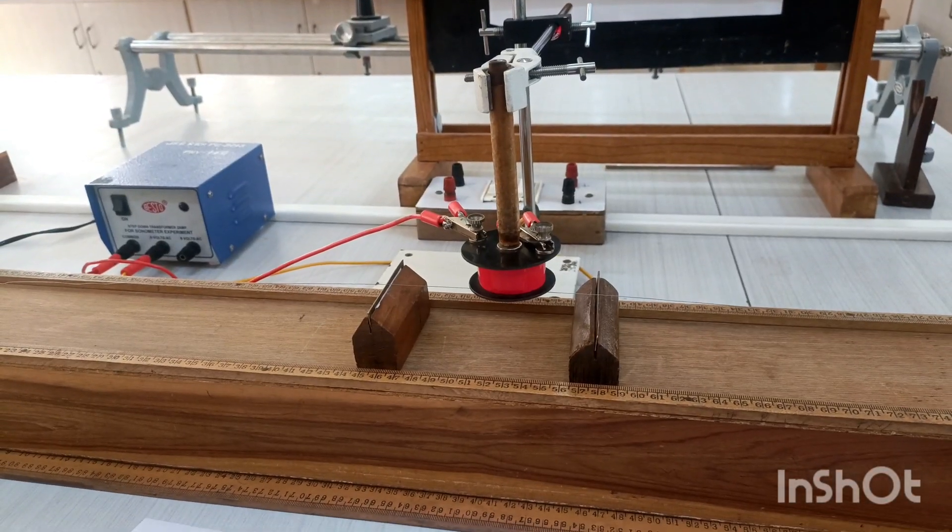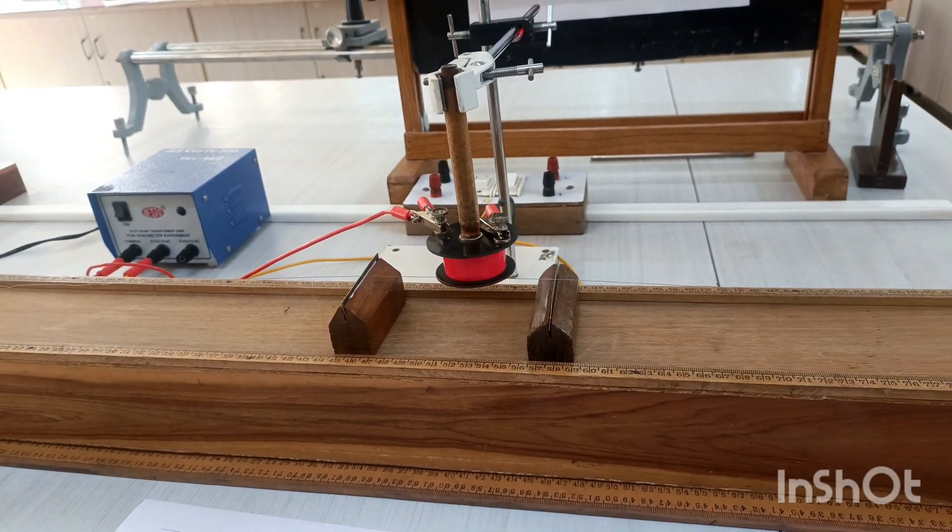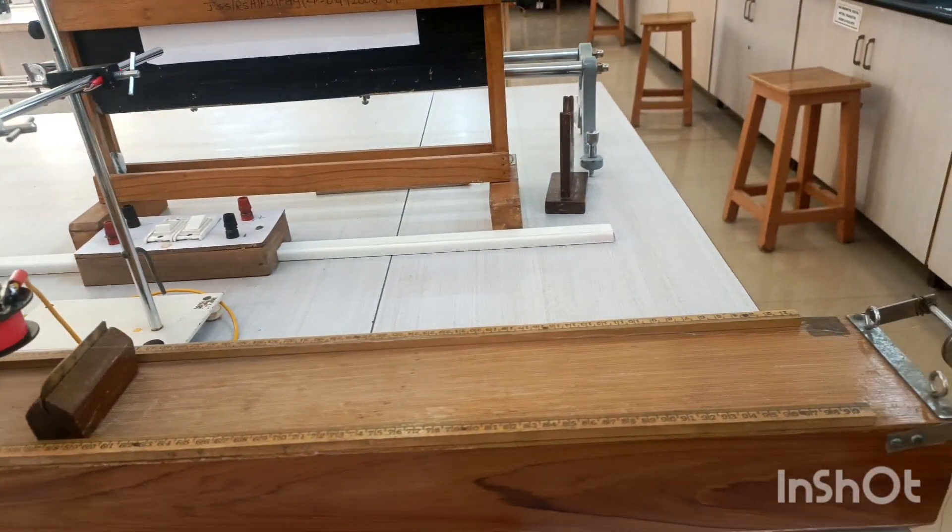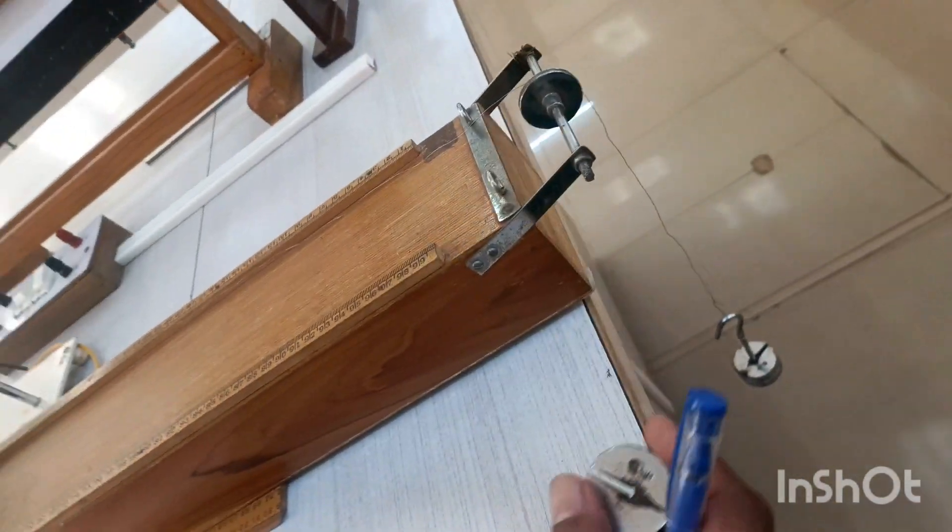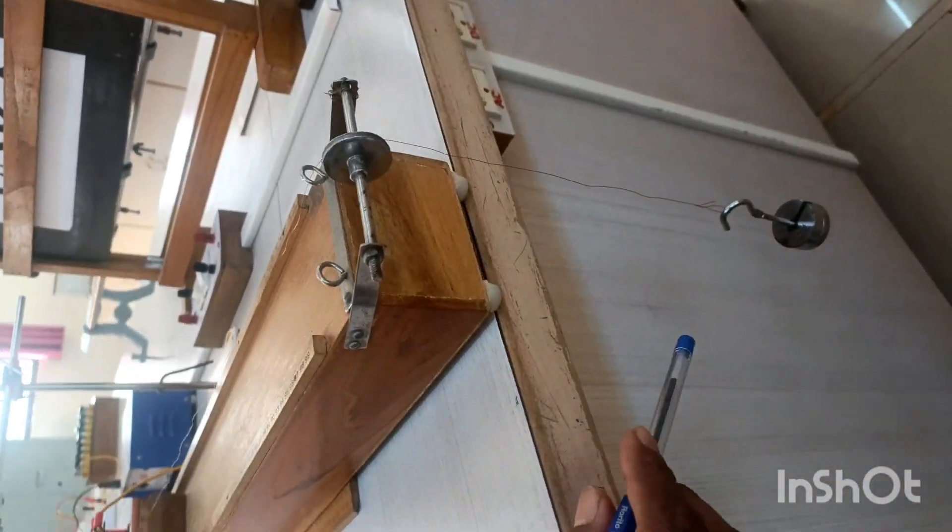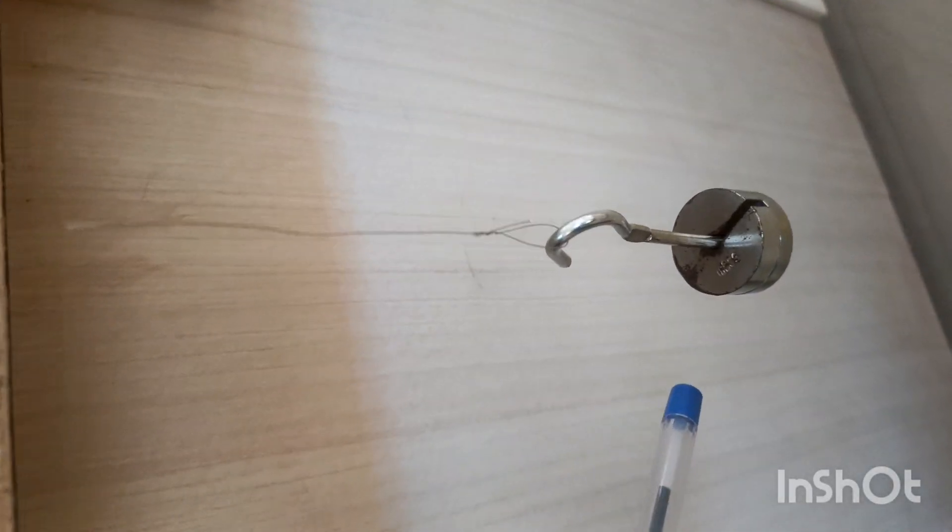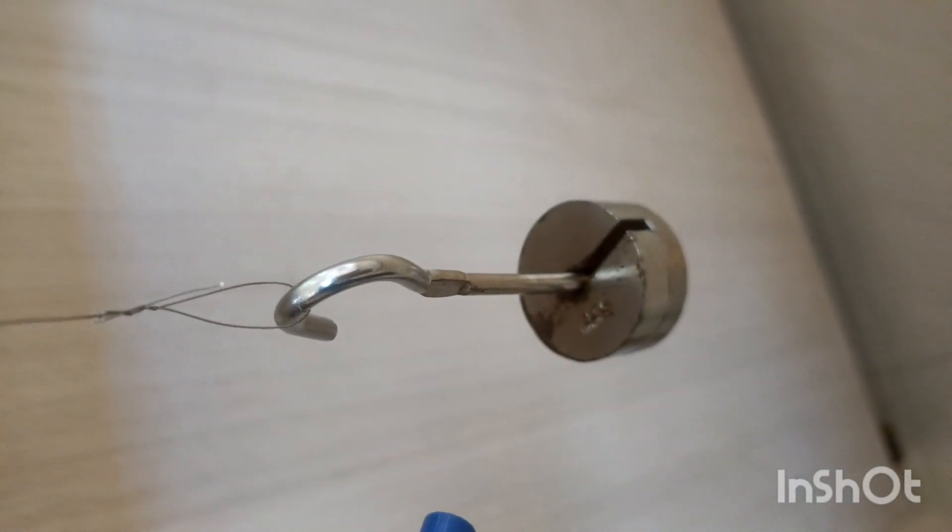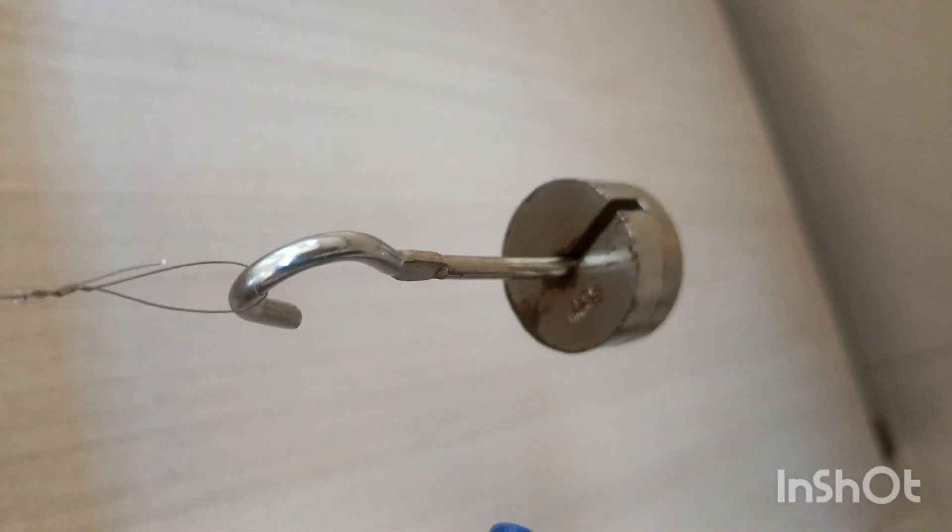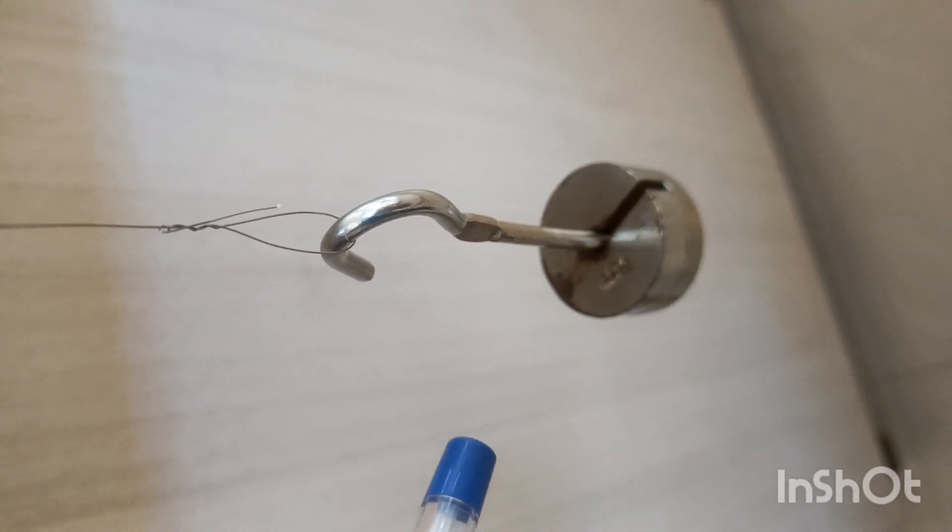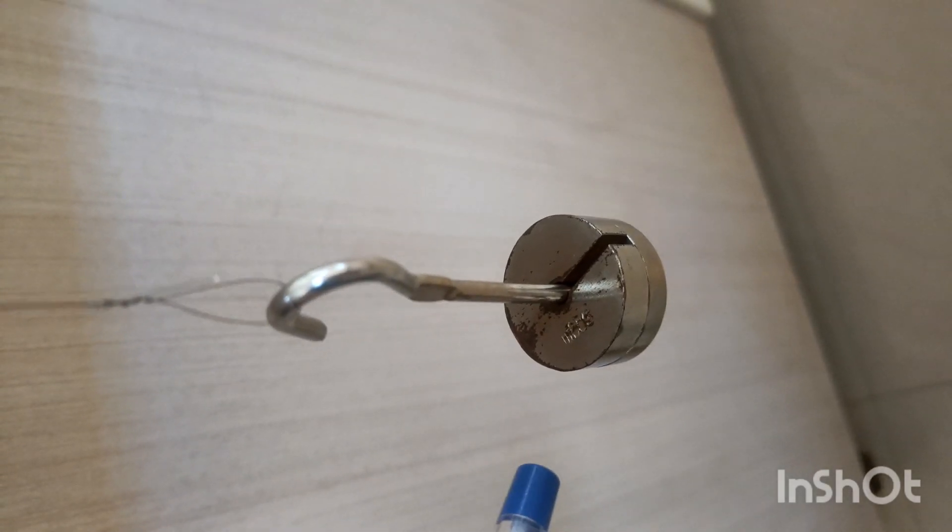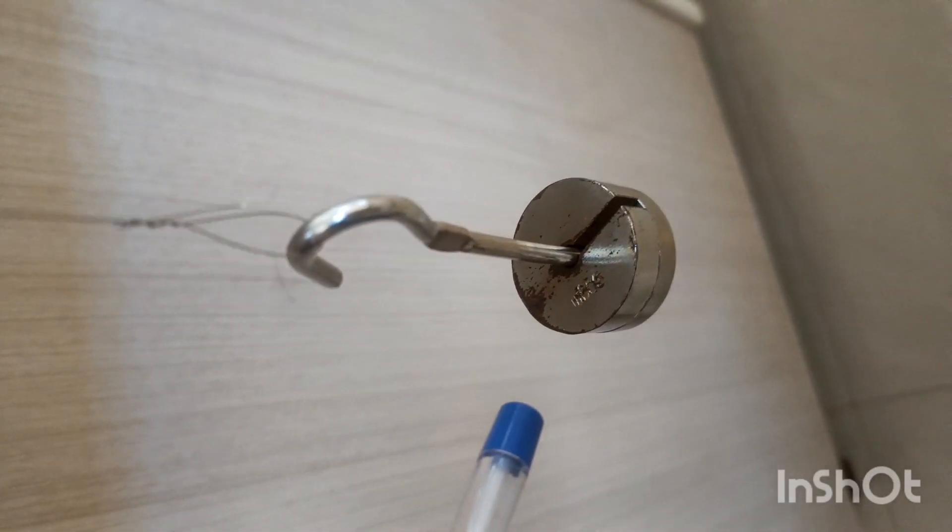To begin the experiment, we put some weight on the weight hanger to create suitable tension. Two slotted weights of 50 grams each are attached, totaling 100 grams or 0.1 kg in SI units. A suitable tension is created in the wire.